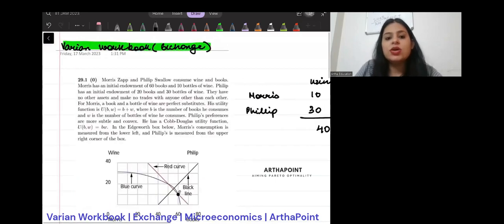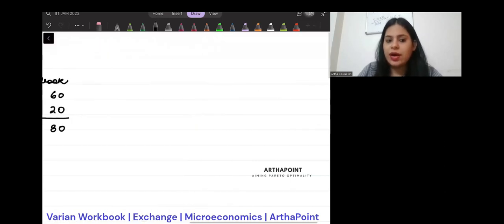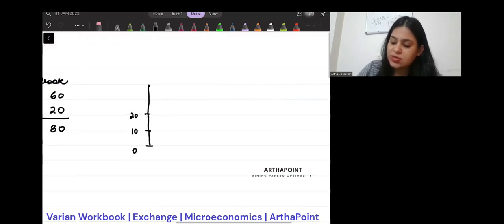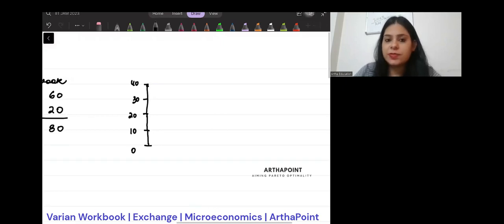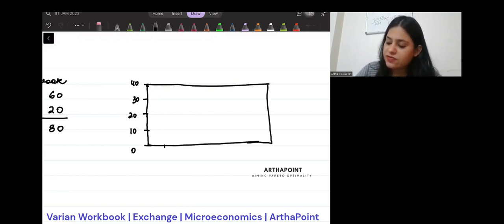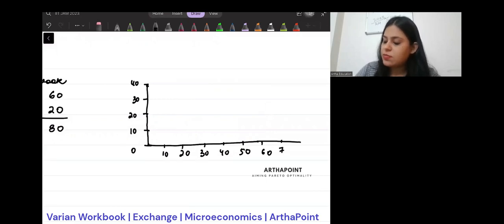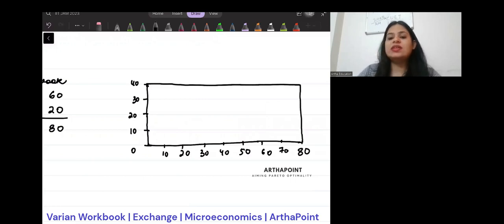I am taking wine on the y-axis. So, this will be 0, 10, 20, 30 and 40. From here, this will start. And then, somewhere here I will have 10, 20, 30, 40, 50, 60. Let's just extend this a bit more. So, I will have 70 and 80. If you just join this, what you will get is called an Edgeworth box.